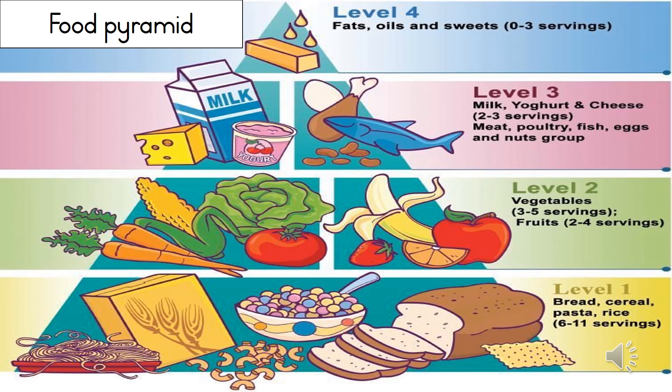The yellow line shows level one. This is an indication that carbohydrates make up the biggest group. We must have between six to eleven portions per day.